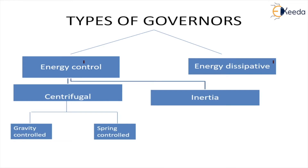The control of energy can be done in two ways. The first is the centrifugal method, where a change in load causes a change in speed which then controls the energy supply. The second is the inertia type, where control is done directly due to change in acceleration and deceleration. Inertia governors are more sensitive than centrifugal governors because they respond instantaneously to changes in acceleration rather than waiting for a speed change.